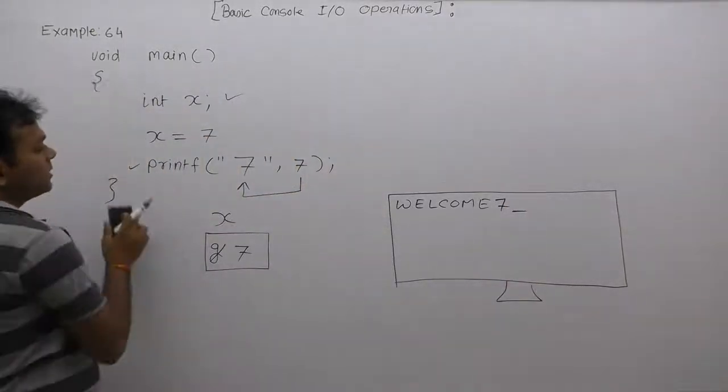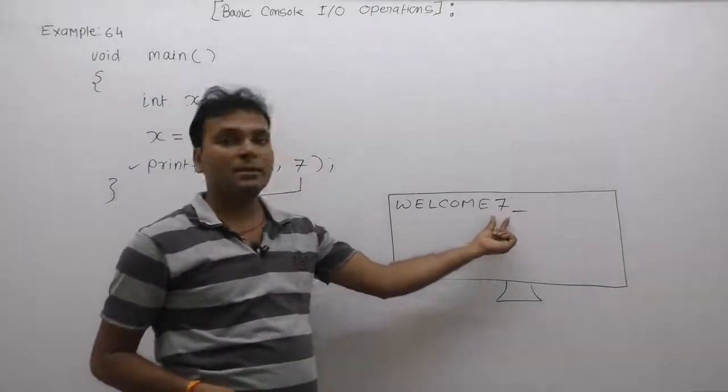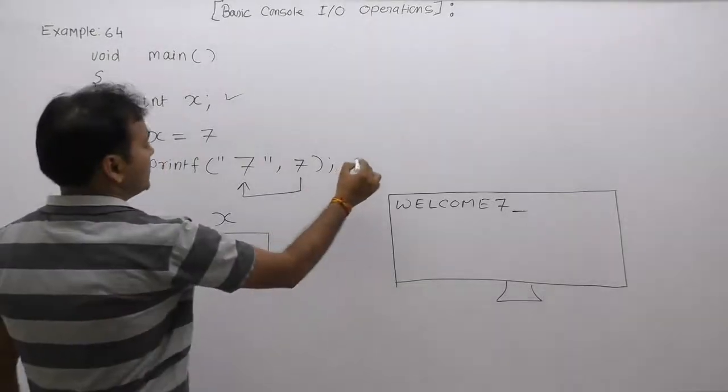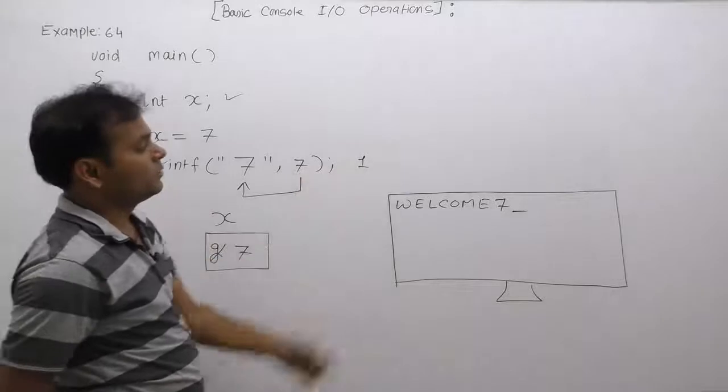Only one digit is displayed, therefore it will return one. In this case, we are getting one but we are not assigning its return value. Therefore, the final output is WELCOME 7.